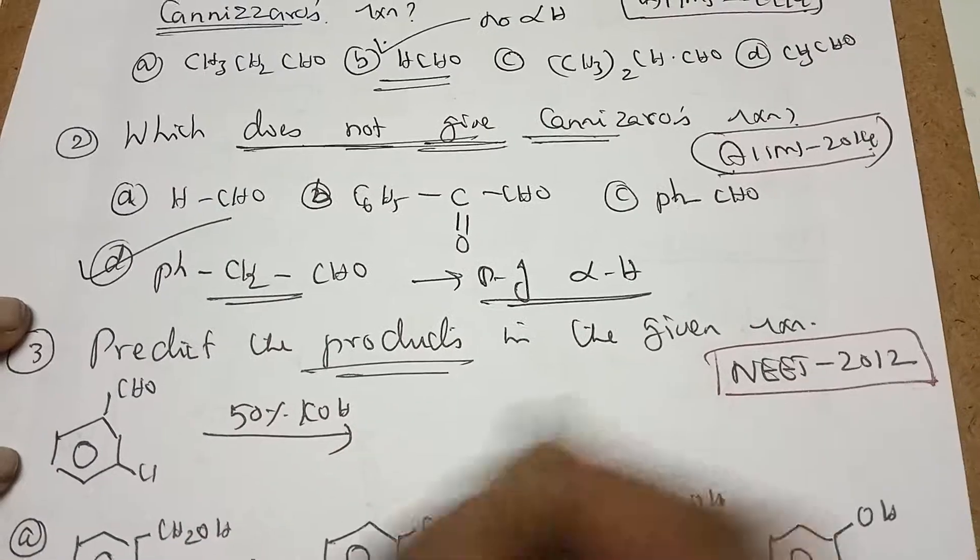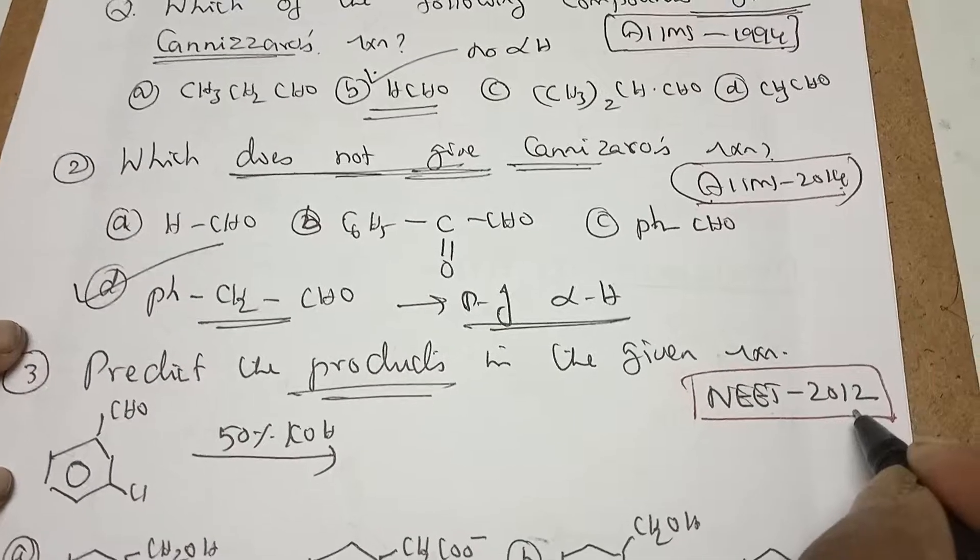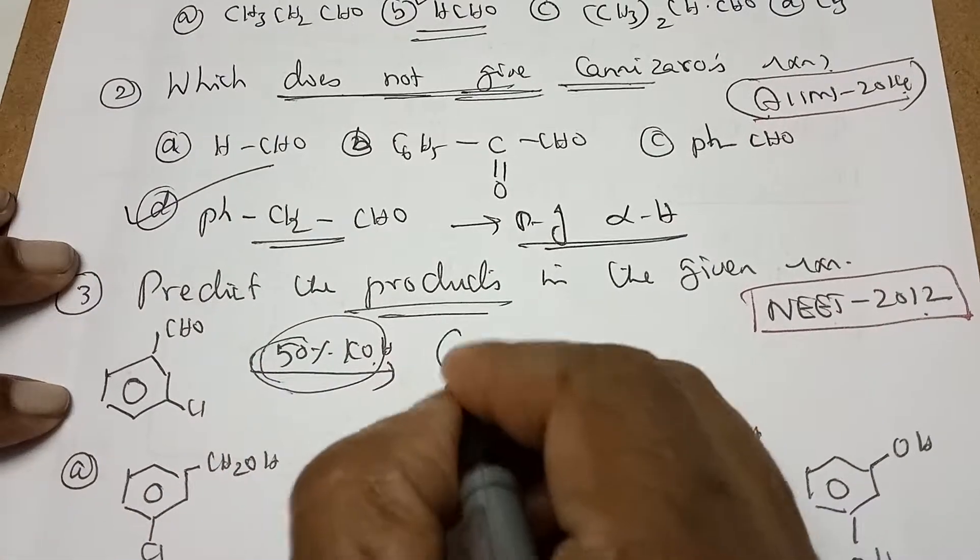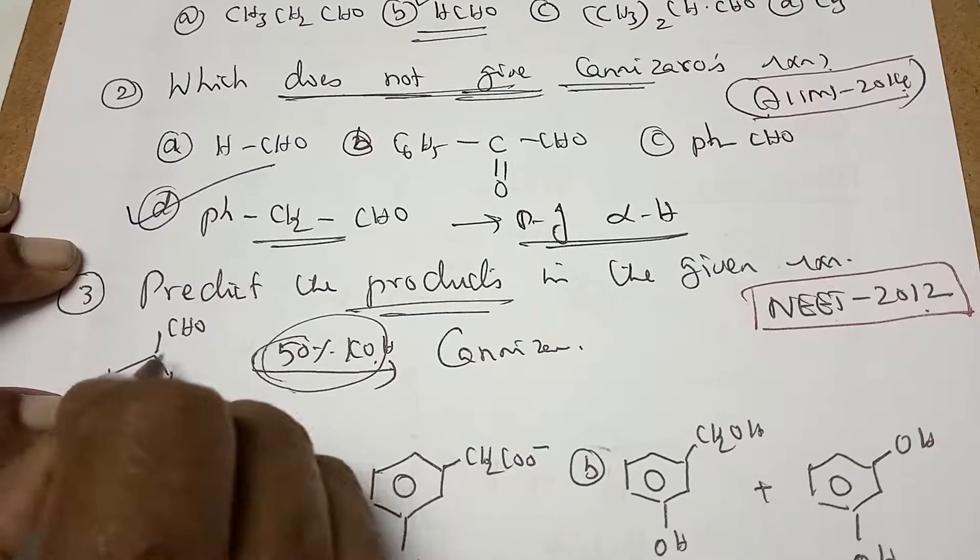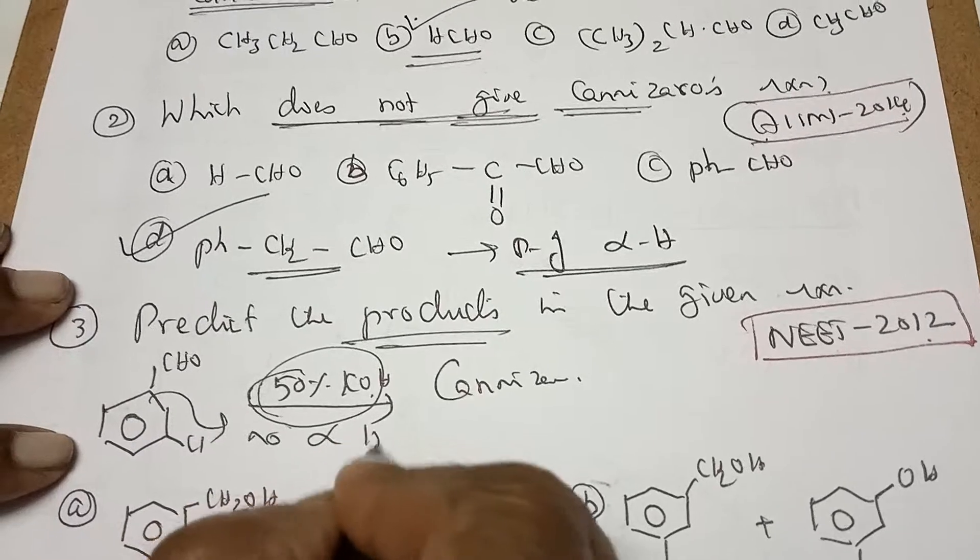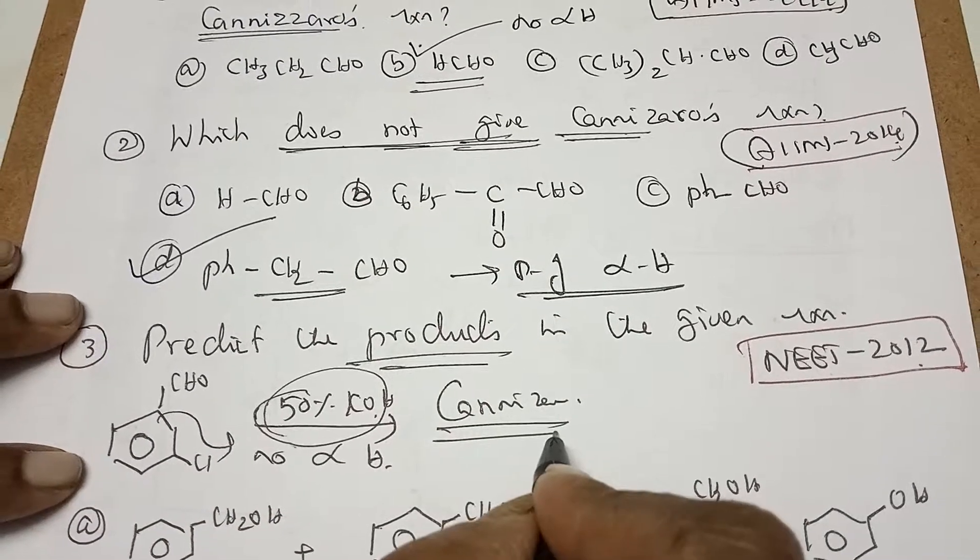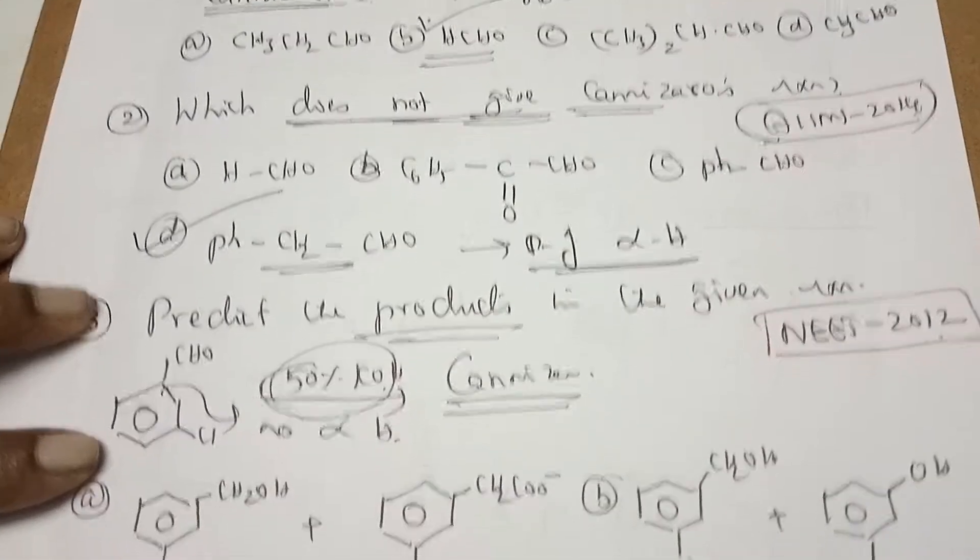And third one is predict the products in the following reaction, NEET 2012. Here 50% of potassium hydroxide indicates it is the Cannizzaro. Here the reactant has no alpha hydrogen. So it is identified as the Cannizzaro.